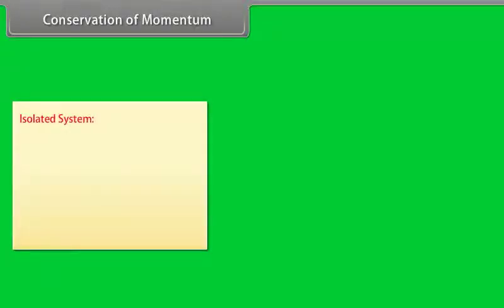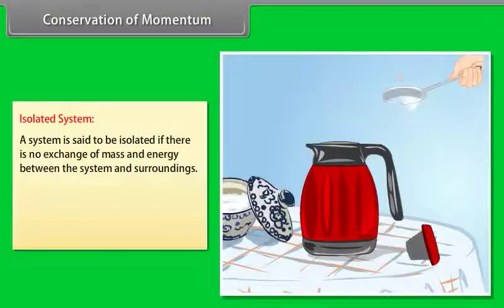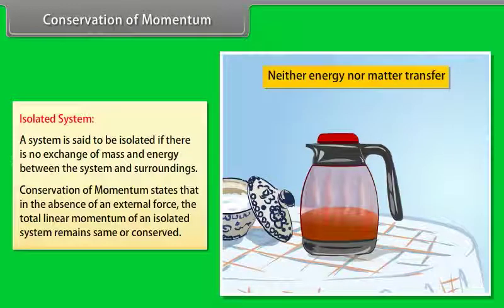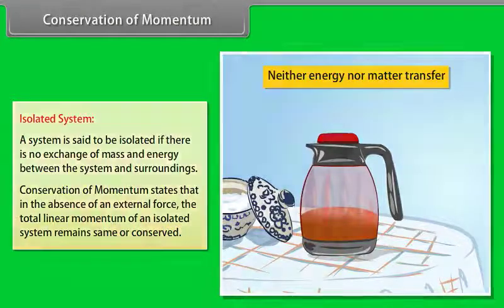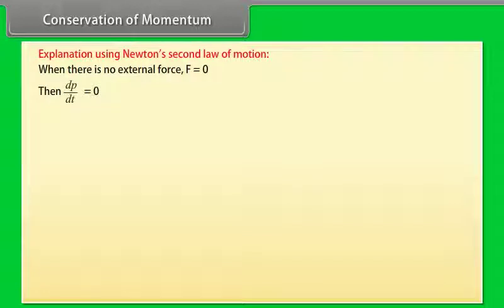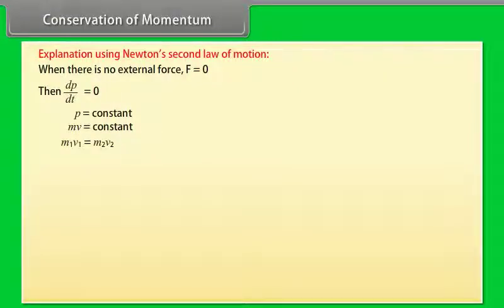Conservation of Momentum: An isolated system is one where there is no exchange of mass and energy between the system and surroundings. Conservation of momentum states that in the absence of an external force, the total linear momentum of an isolated system remains conserved. Using Newton's second law: when F = 0, dP/dt = 0, so P = constant, meaning M1V1 = M2V2.